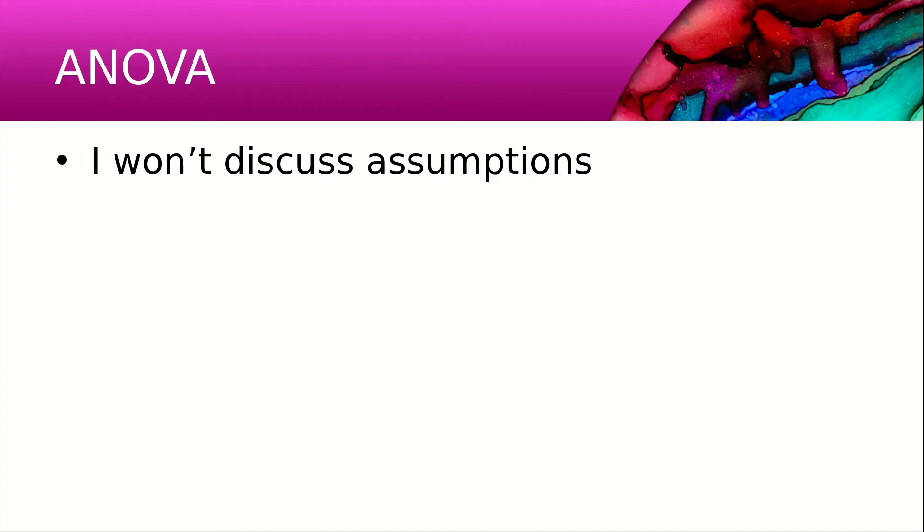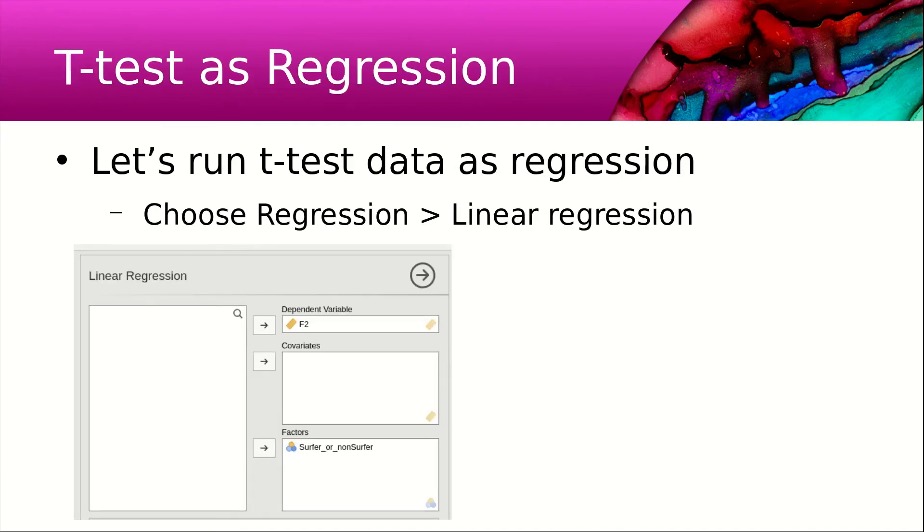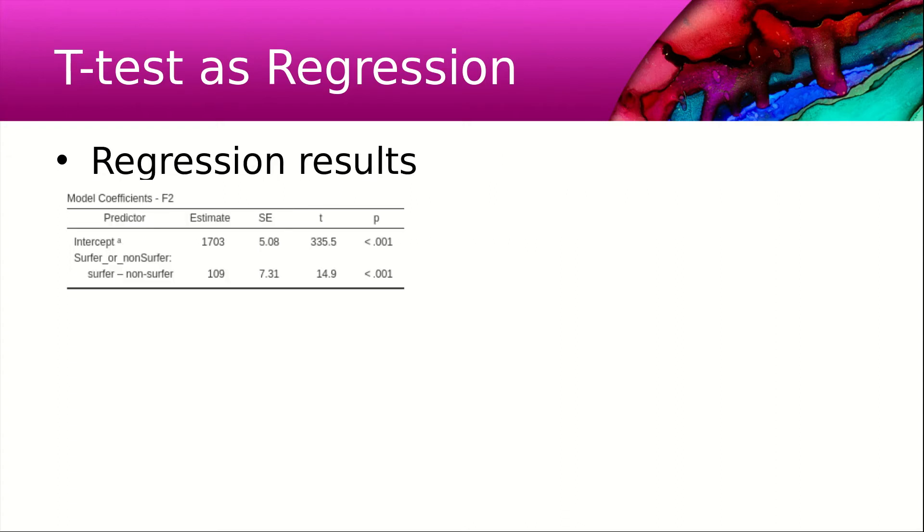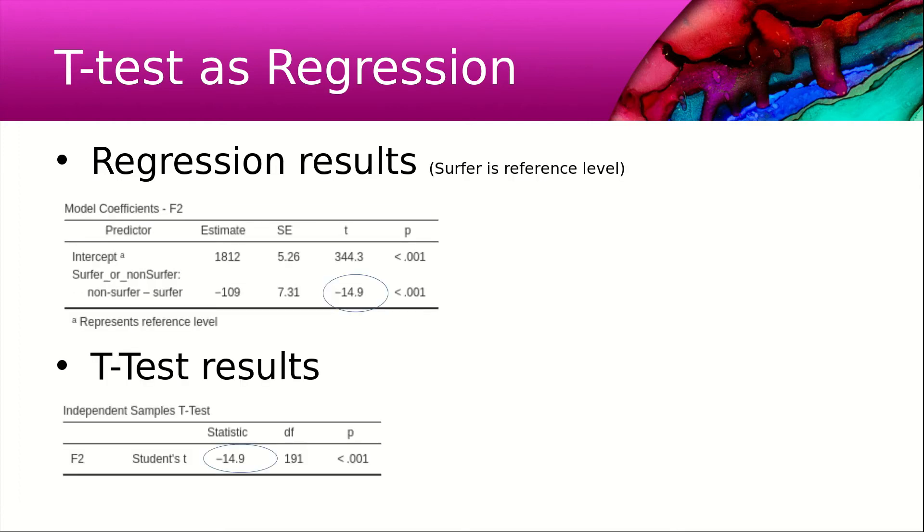Once again, I'm not going to discuss the assumptions. Now let's look at how we can do a t-test as regression. So choose regression, linear regression, put the variables in, and these are the results of the regression. What we see is that the results are identical.